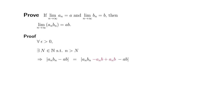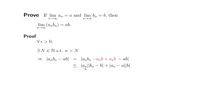Then I'm going to use the triangle inequality to split this into the first two and the last two terms. Since aₙ is in common, I pull it out, then you have absolute value of bₙ minus b. For the last two terms, b is in common, so I pull it out, and you have aₙ minus a. So we are trying to control the absolute value of aₙ, the absolute value of bₙ minus b, and the absolute value of aₙ minus a.